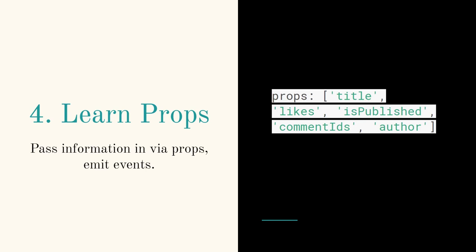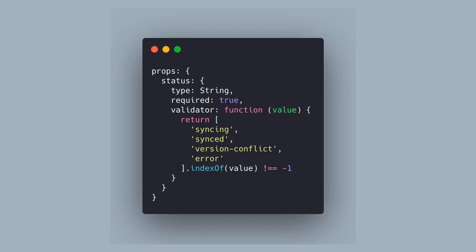Tip four: Props. You can pass information into your components with props and emit events back. If you're coming from another framework — like Angular with its inputs and outputs — this is the same concept. You want to have smart components that take information in and do things with it. You can actually do validation in your props, which the style guide recommends — setting required and adding validators. If these fail, you'll get errors in your console. It's good practice to set up props correctly.